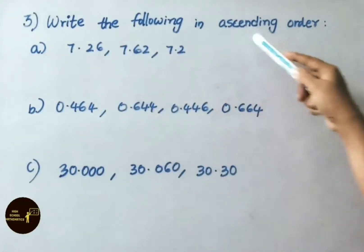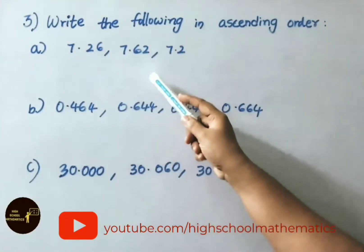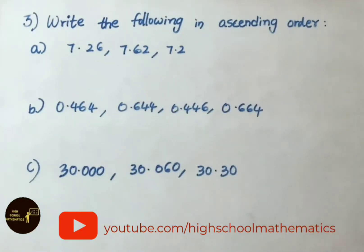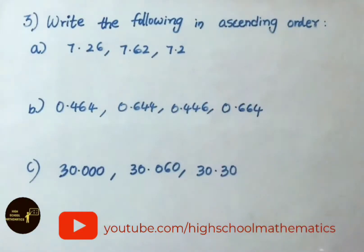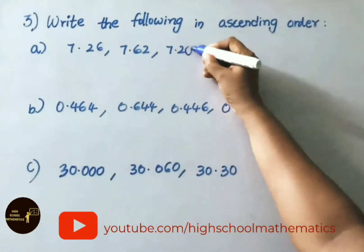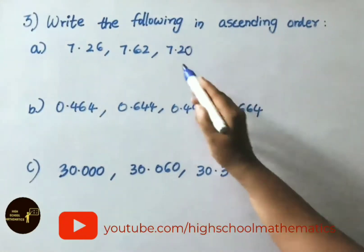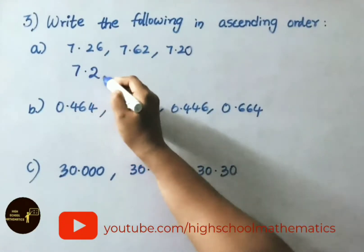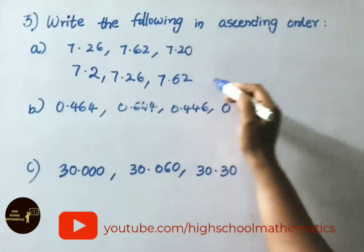See the third question: write the following in ascending order. Ascending order means setting the numbers from smallest to greatest. See the first part: 7.26, 7.62, and 7.2. First convert to like decimals — 7.2 has 1 decimal place, so place a 0 to get 7.20. Now arrange in ascending order: the least is 7.20, then 7.26, then 7.62.